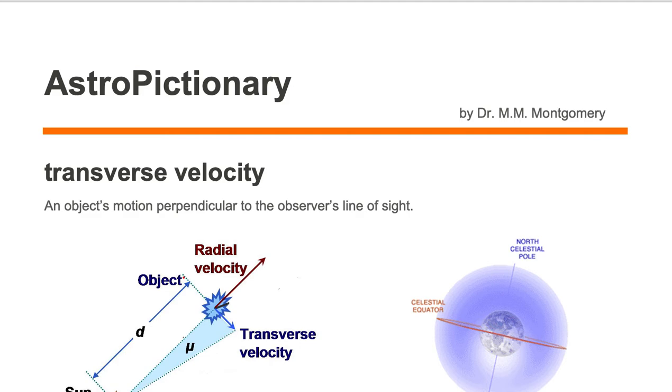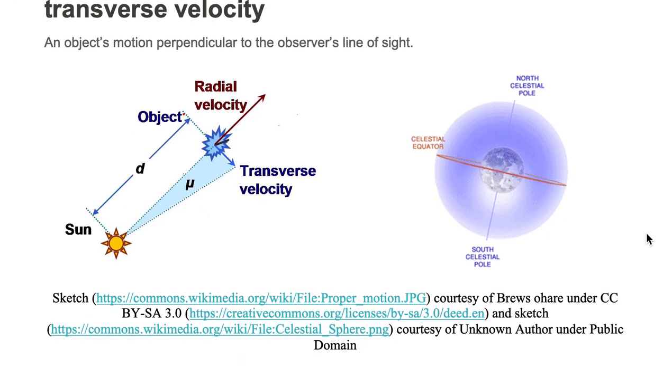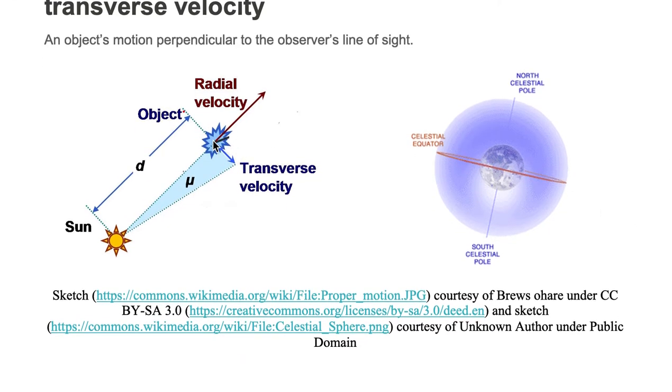Transverse velocity is an object's motion perpendicular to the observer's line of sight. Here we're looking at an event in the sky relative to that of the sun. If we use the sun as our line of sight, we could draw this red line here that passes through the event.